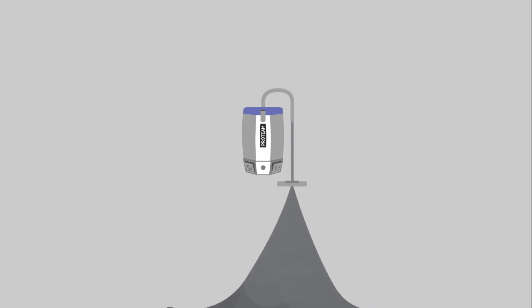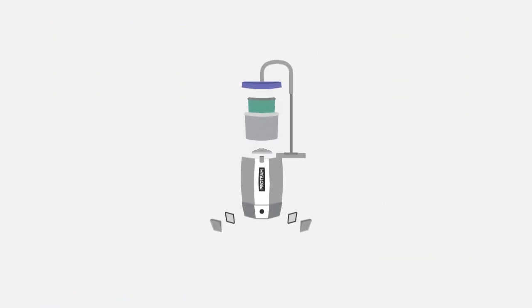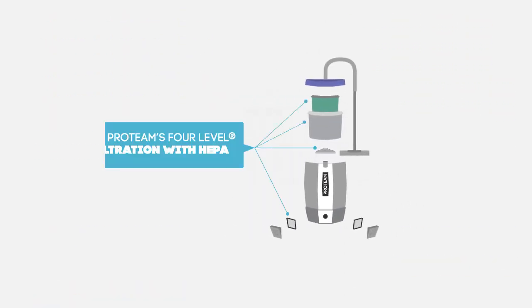During vacuuming, 99.97% of allergens and asthma triggers down to 0.3 microns in size are removed from the air, improving indoor air quality thanks to Pro Team's four-level filtration with HEPA.